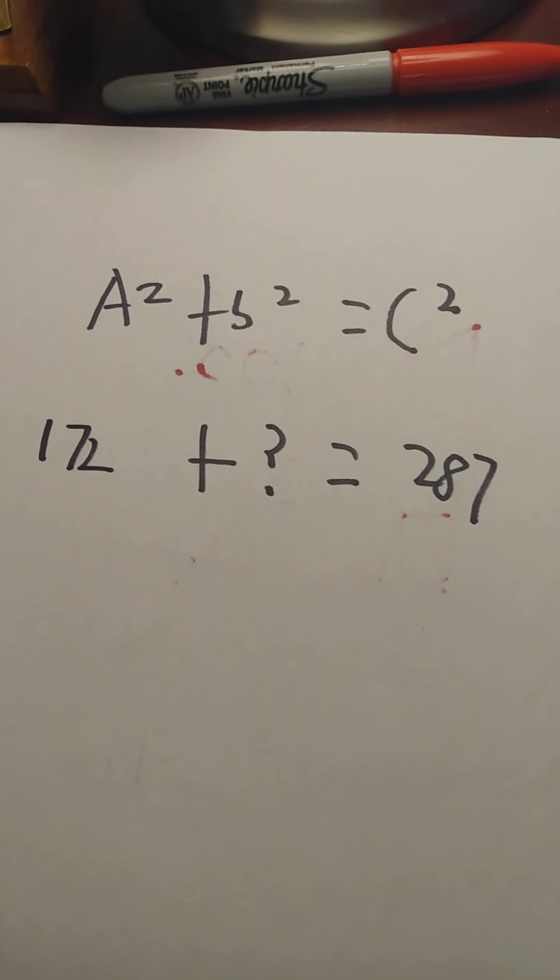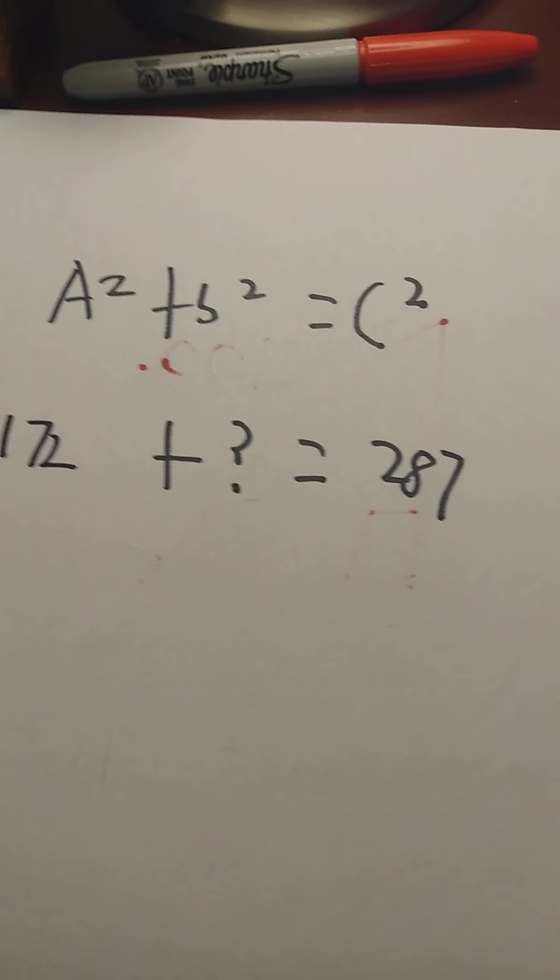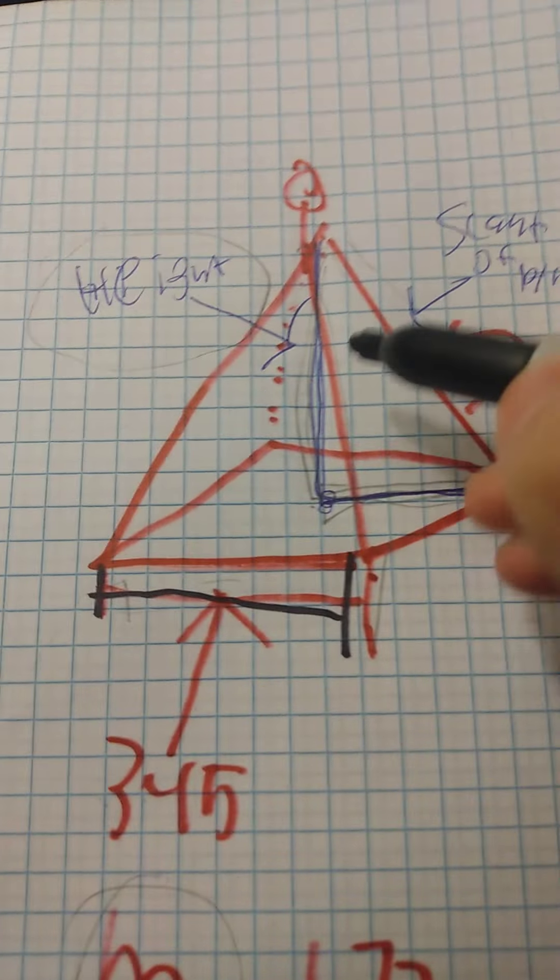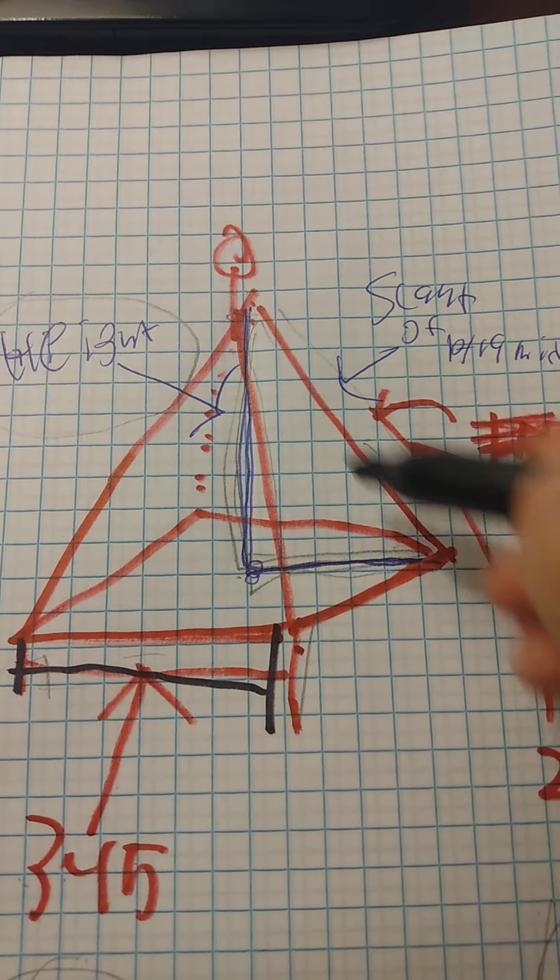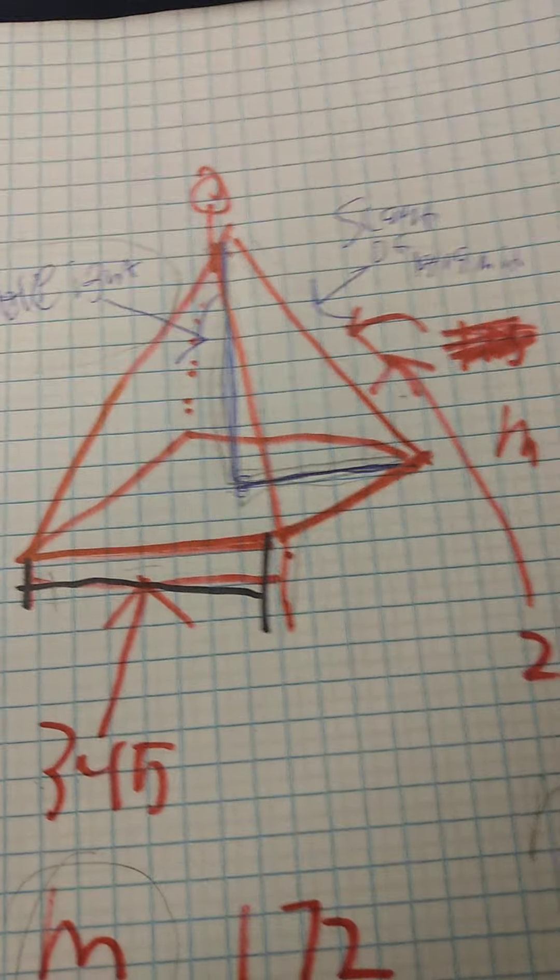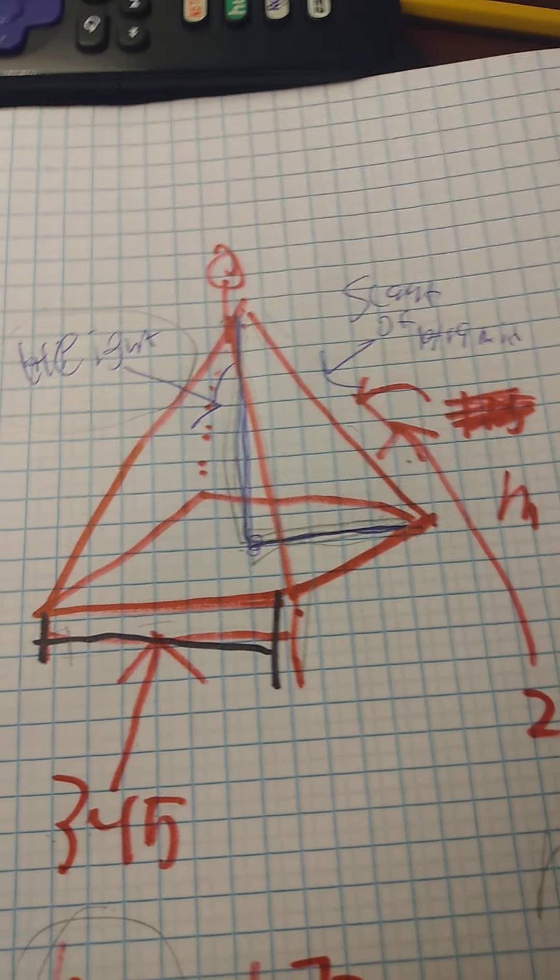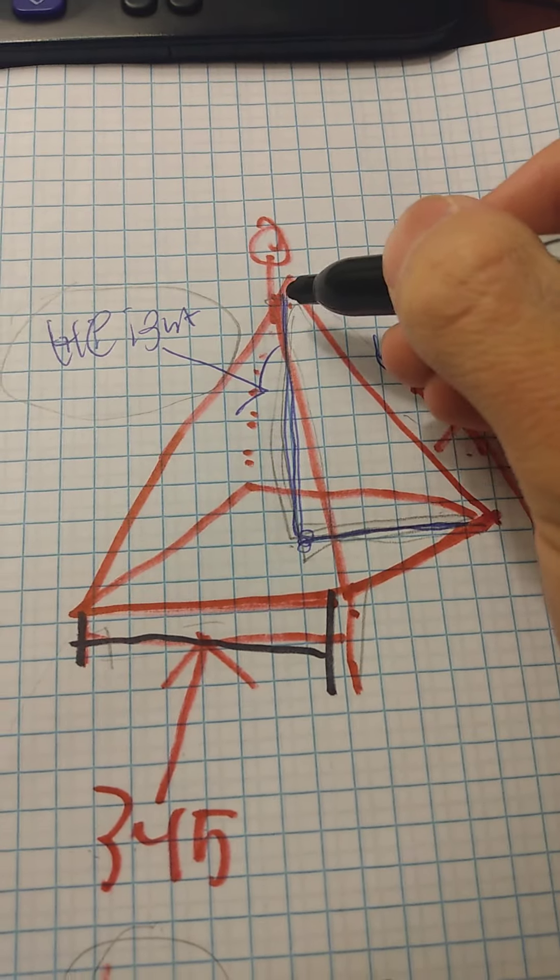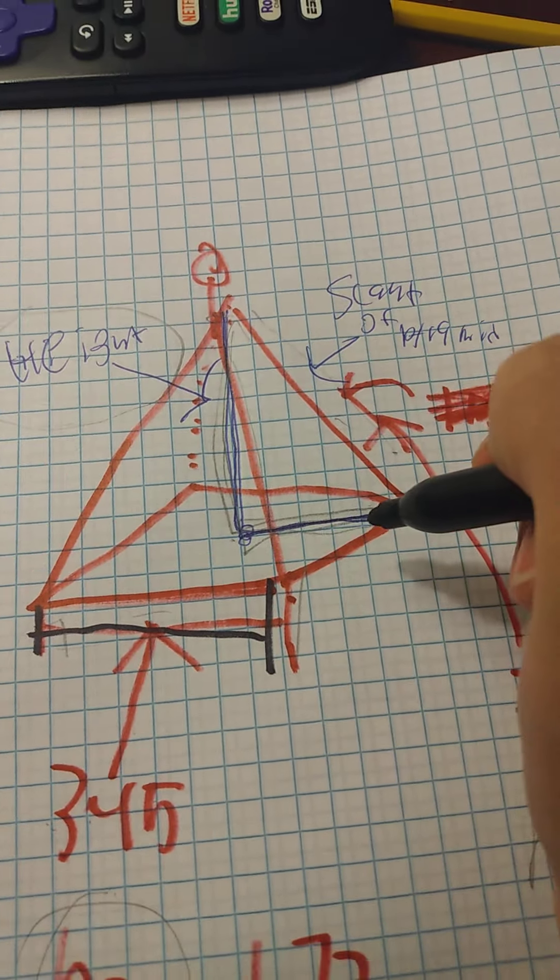You might be thinking, how does this apply to Pythagorean theorem? This will not work. Well, it actually does, because the purple triangle is actually in the shape of a right triangle. Pythagorean theorem will only work if there is a right triangle included.